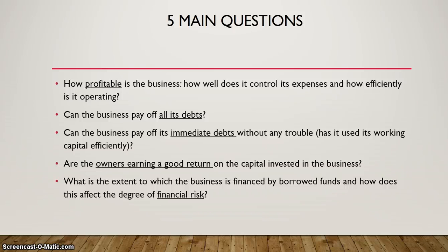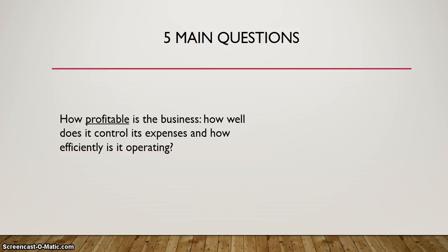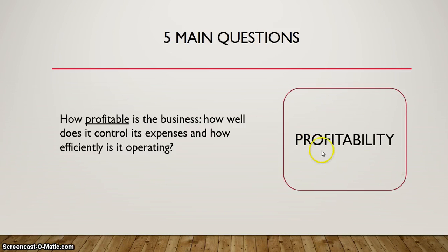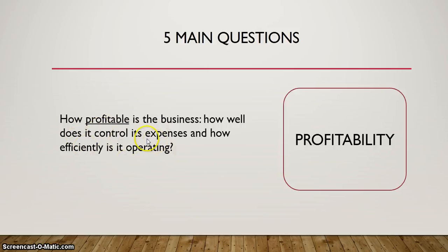Now let's look at each of those questions. If we take the first question — how profitable is the business, how well does it control its expenses, and is the business operating efficiently — the key word there is profitable. So when we are looking at the category this question relates to, we are looking at profitability. If you get a question in the exam asking about profitability, you know this is the question it's referring to. We should be looking at things like the expenses and the operating efficiency of the business.